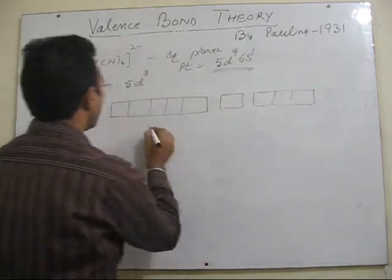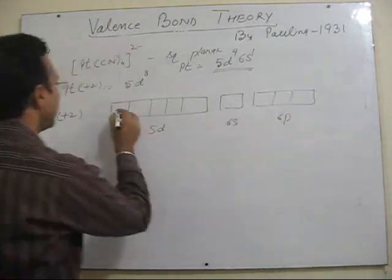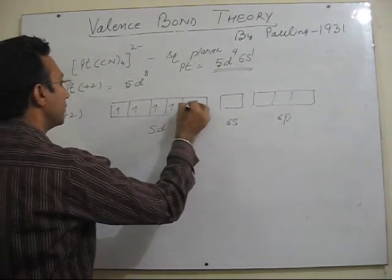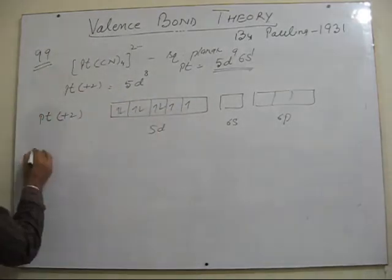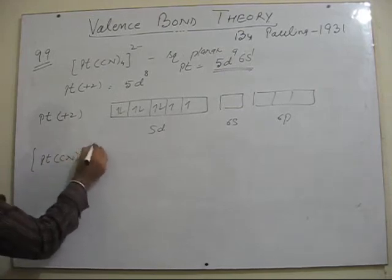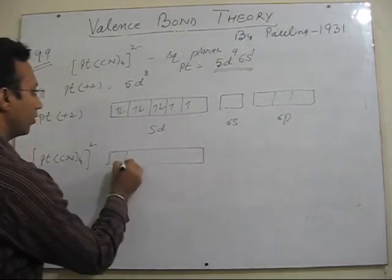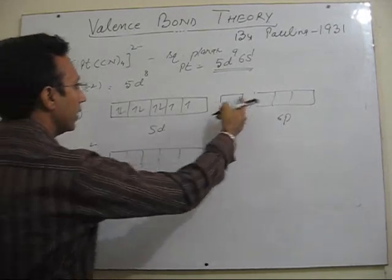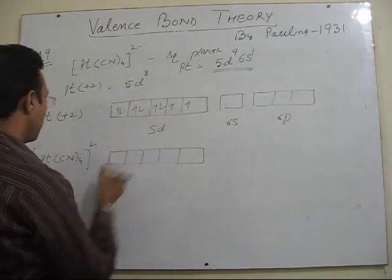So if I represent orbital representation in plus 2 oxidation state, it will be just like the case of nickel 2+. So 5d 6s 6p. So 5d8 is there.